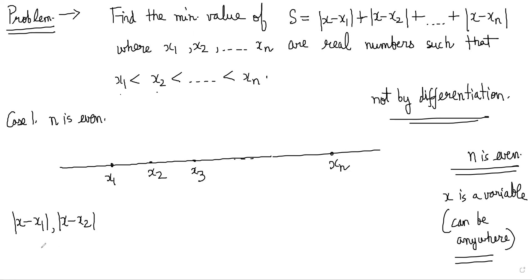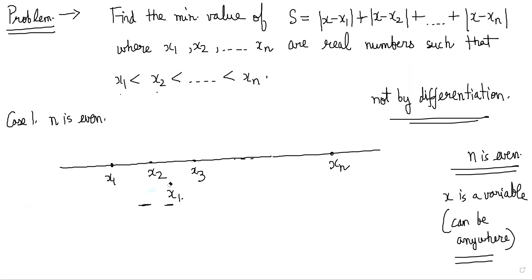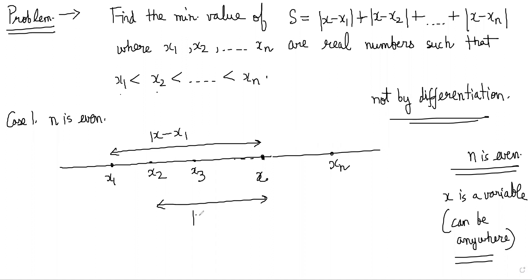First, understand the meaning of |x - x1|. If you know basic geometry or complex numbers, you know this is the distance between two points x and x1 on the number line. So ultimately, what we have to do is find the sum of the distances of x from each of these points. We place x somewhere and the distances |x - x1|, |x - x2|, etc., are what we need to minimize in total.